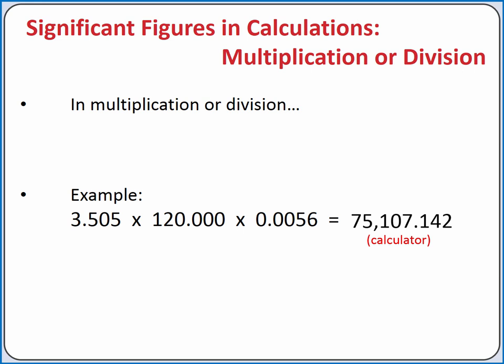To determine how many significant figures we can keep in our answer, let's look at how many significant figures each factor has. 3.505 has 4 significant figures. 120.000 has 6 significant figures. And 0.0056 has 2 significant figures. Our answer can only keep as many significant figures as the factor with the fewest, so we can only keep 2 significant figures. This means we will round our answer down to 75,000.